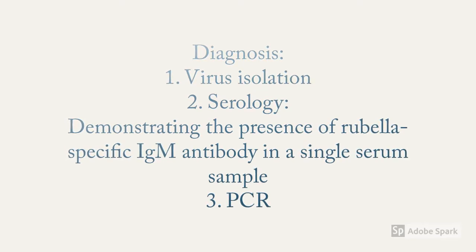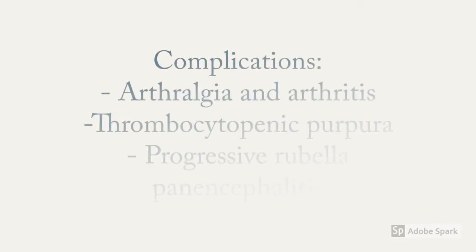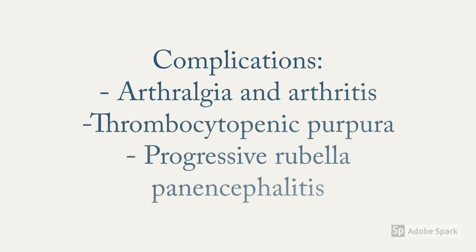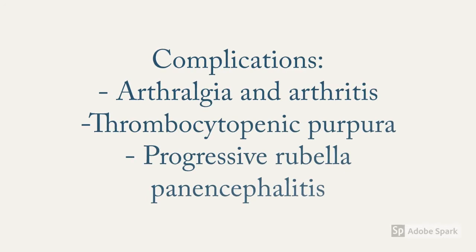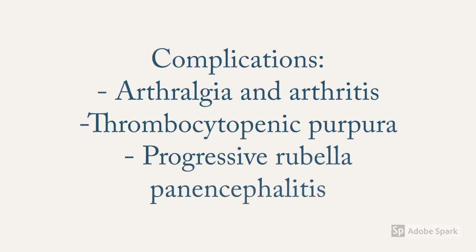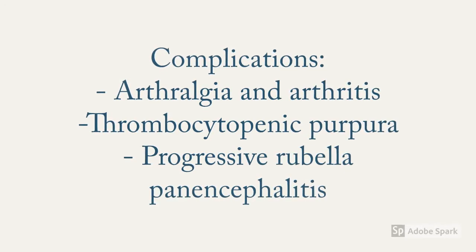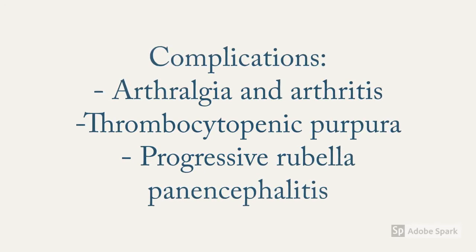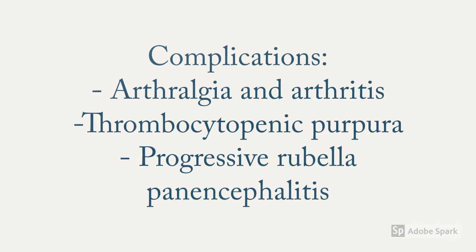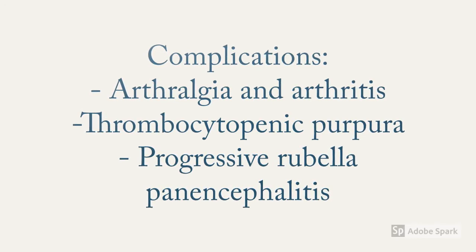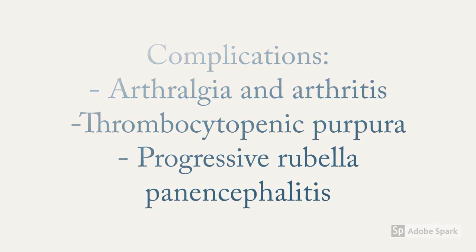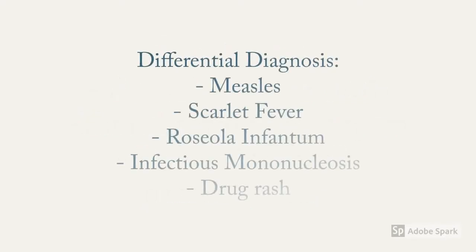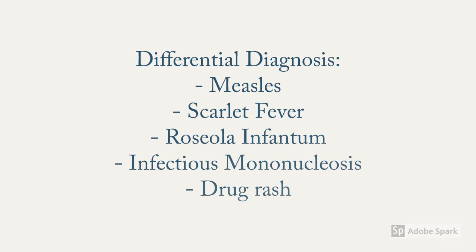Complications include arthralgia and arthritis, thrombocytopenic purpura, and progressive rubella panencephalitis, which is a slow viral infection of the brain due to rubella characterized by chronic encephalitis. It involves neurological changes such as seizures, ataxia, spastic weakness, and optic atrophy.